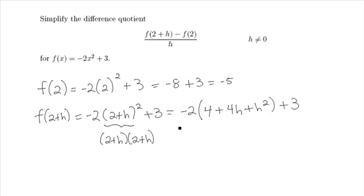Now we get to distribute the negative 2 to every single term, remembering to distribute both the negative and the 2. So we get negative 8, negative 8h, and negative 2h squared plus 3.